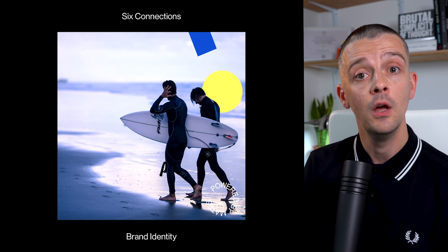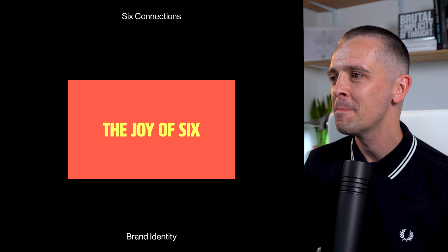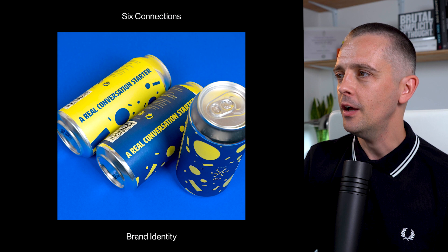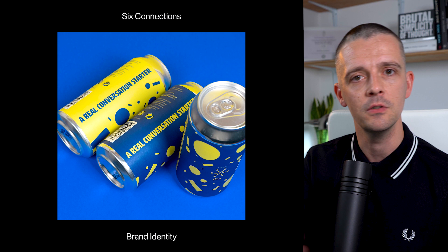We're just using one typeface in one way at the moment. None of these applications actually say the words 'Six Connections' anywhere, but they still look like part of the family — that's what a good identity design system does. Another thing I contributed was copywriting. I also work as a brand strategist, and to express the personality of the brand — more fun, more down to earth — we created taglines like 'powered by mates' and 'the joy of six.' On the beer cans: 'a real conversation starter' — a double meaning, both a literal prompt to have a chat over a beer and a reference to starting real, honest conversations with friends that go beyond the surface level and check in on how people are.